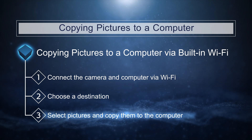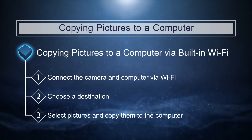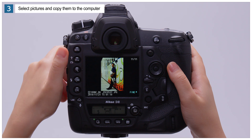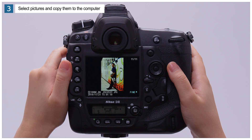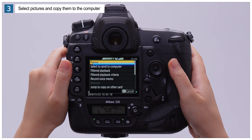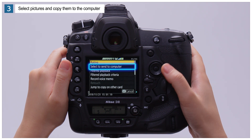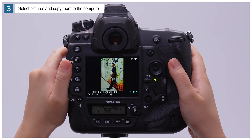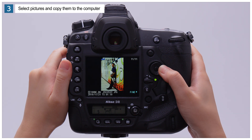The last step is to select pictures and copy them to the computer. Press the Playback button on the camera and choose either Full Frame or Thumbnail Playback. Find a picture you want to copy to the computer and press the I button. Highlight Select to send to computer and press the center of the multi-selector. A green send icon will be displayed on the picture while upload is in progress, changing to blue when upload is complete. Repeat this step as needed to upload additional pictures.